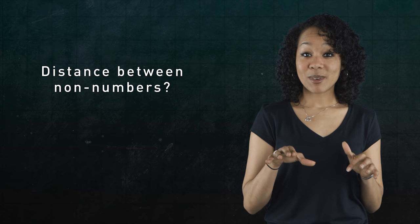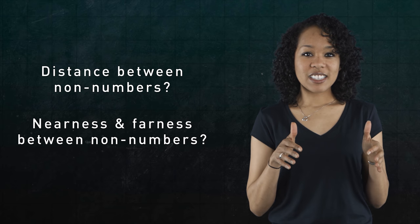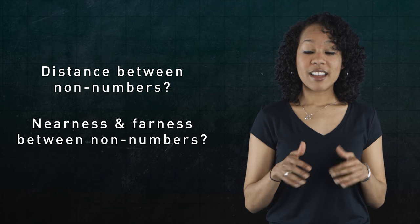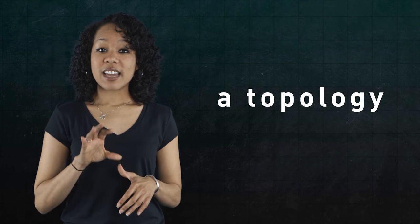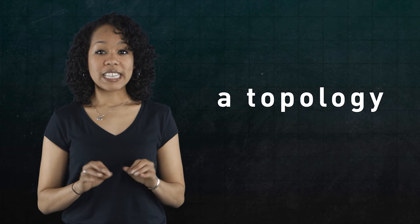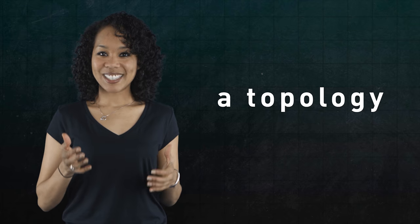But what if you want to make sense of distance between things that aren't numbers? And what if you want to make sense of nearness and farness without using numbers? This is where topology comes in. A topology is an axiomatic way to generalize the open shapes you get when you have a metric. So, what is a topology exactly?